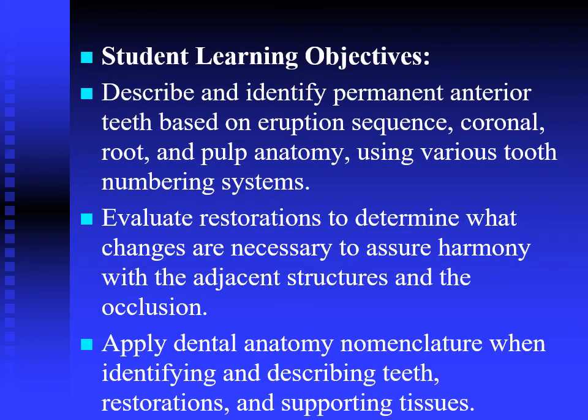The student learning objectives for this lecture are to describe and identify permanent anterior teeth based on eruption sequence, coronal anatomy, root anatomy, and pulp anatomy using various tooth numbering systems. We will also evaluate restorations to determine what changes are necessary to assure harmony with the adjacent structures and the occlusion, and apply dental anatomy nomenclature when identifying and describing teeth, restorations, and supporting tissues.